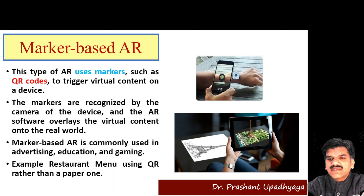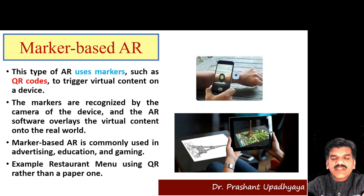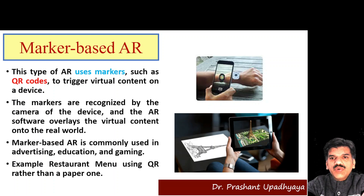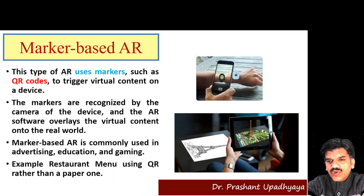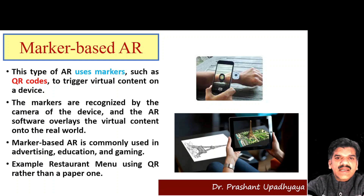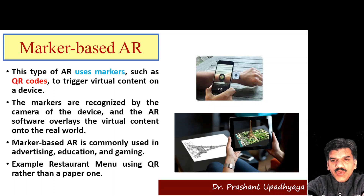Some examples shown with figures: if you are looking at smartwatches, you just click on the smartwatch and you can get different types of icons to select from the mobile phone. Similarly, you have certain pictures — you can scan that picture and everything related to those pictures will appear. So these are some marker-based AR examples where particular markers are scanned with the help of QR codes.